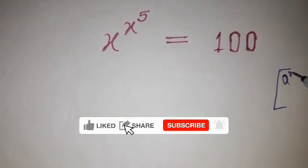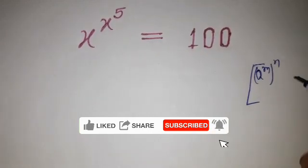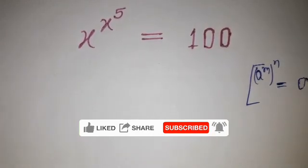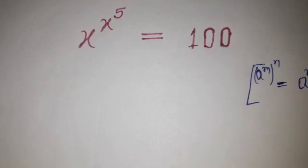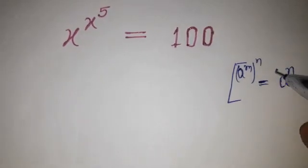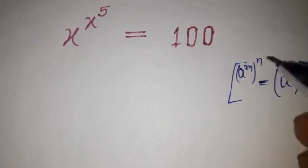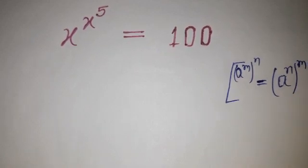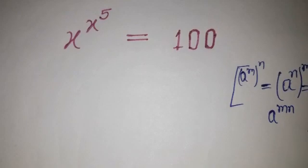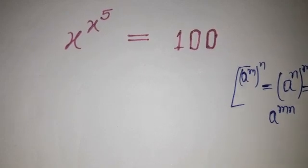Here, if a to the power m, and that is having power n, so that can be written as a to the power n and having power m. So this will come here and this will be here, and that is equal to a to the power m into n. Both are right, so this concept we are going to use over here.